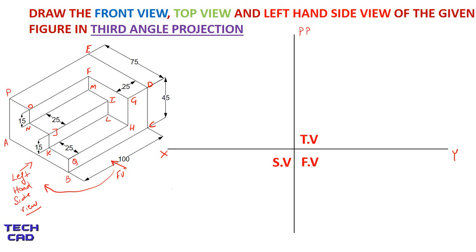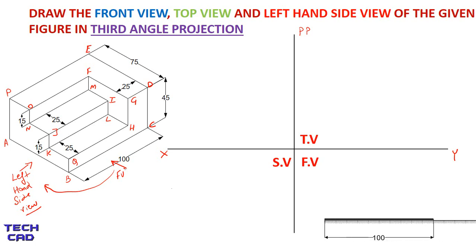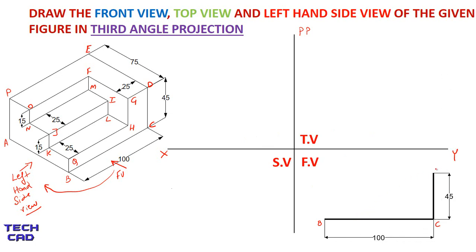I am going to make the front view. First, make line BC which is 100 mm. After that, draw line CD which is 45 mm. You will see that DG is 25 mm, and FO is 75 mm because 100 minus 25 equals 75. Instead of making separate lines DG and FO, I make a straight line from D point towards O, because when you see from the front you see the complete line from D to O which is 100 mm.